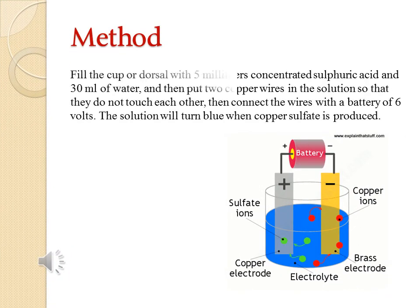Fill the glass vessel with 5 ml of concentrated sulfuric acid and 30 ml of water. Then place two copper wires in the solution so they do not touch each other. Connect the wires to the 6-volt battery. The solution will turn blue as copper sulfate is produced.